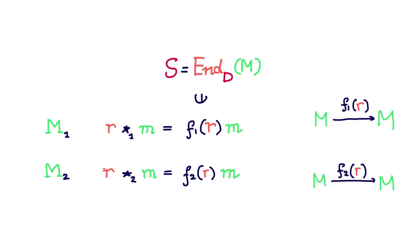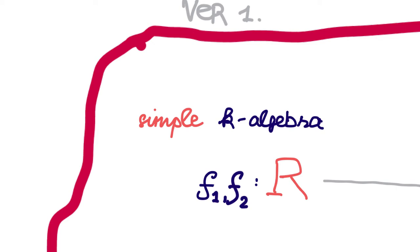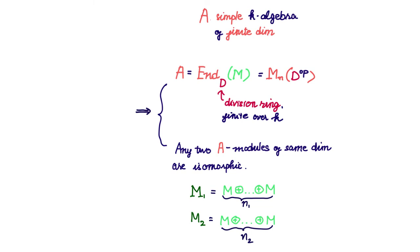Let us denote by M1 and M2 the R-module structures on M induced by f1 and f2 respectively. To understand the relationship between f1 and f2, we want to understand the relationship between these modules. And to understand the relationship between these R-modules, we need to understand the ring R. Any two modules over a simple finite dimensional k-algebra that are of the same dimension must be isomorphic. The reason is that if A is a simple Artinian ring, then there is a unique simple A-module, and every finite dimensional A-module is a direct sum of copies of that simple module. So two A-modules of the same dimension must be isomorphic.